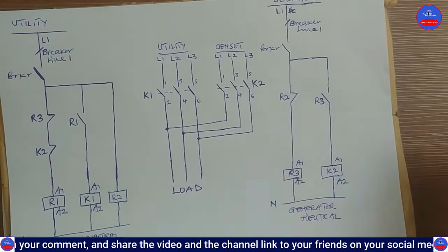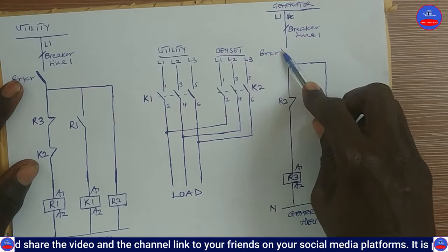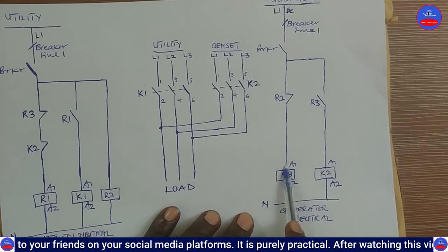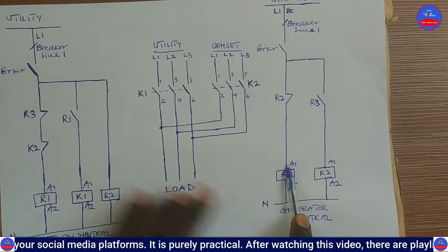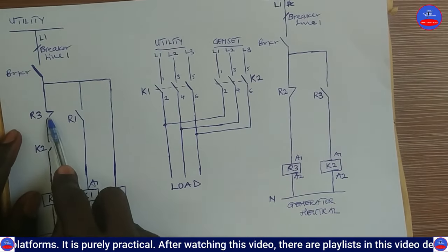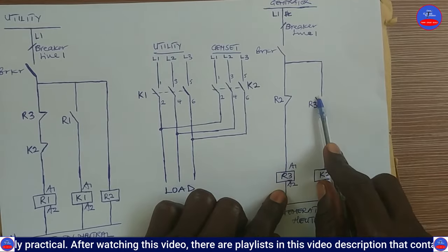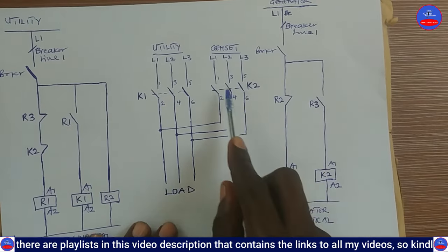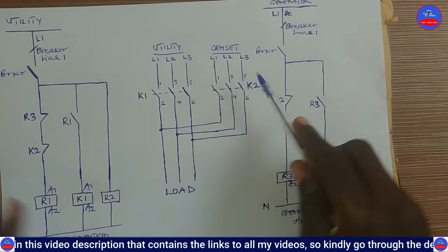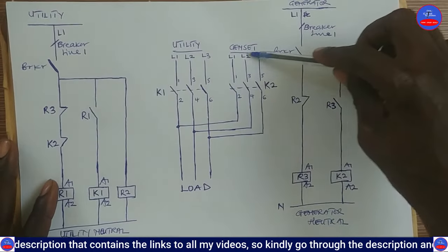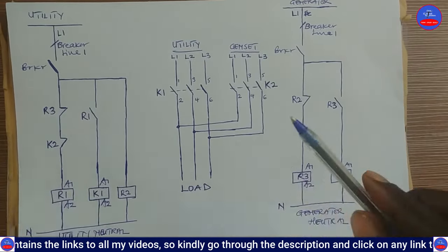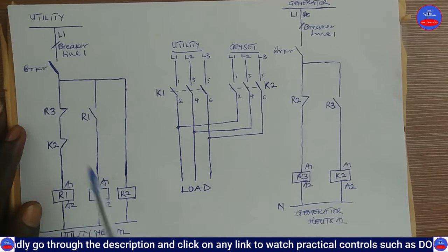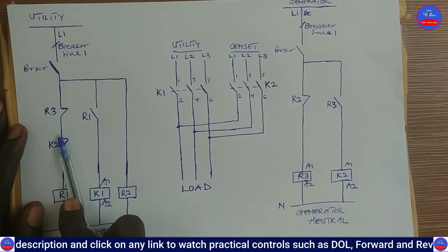Now we come to operate the generator. When the generator is on and its breaker is closed, R3 will energize. When R3 energizes, one contact opens and another closes. When that contact closes, K2 energizes. When K2 energizes, its contacts close to apply the generator power to the load. Now we are operating on the generator. With K2 energized, that contact on the utility side is also open.